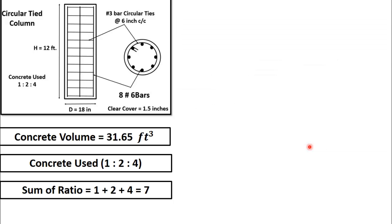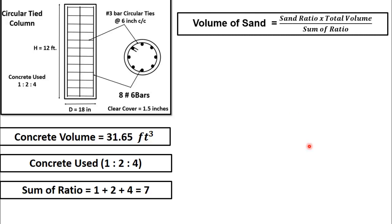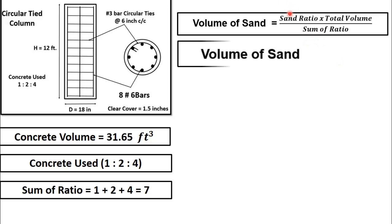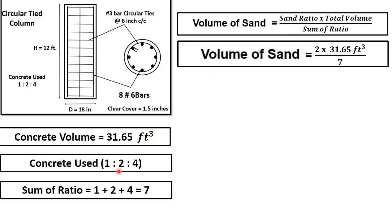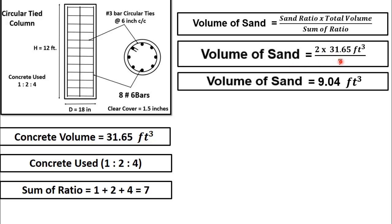Now we will calculate the volume of sand required using the same equation: volume of sand = (sand ratio / sum ratio) × total volume. The ratio of sand is 2, total volume is 31.65 cubic feet, and sum ratio is 7. After simple calculation, volume of fine aggregate or sand required is 9.04 cubic feet, which is nearly equal to 9 cubic feet.